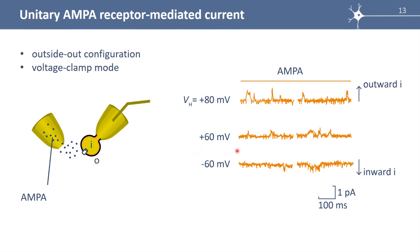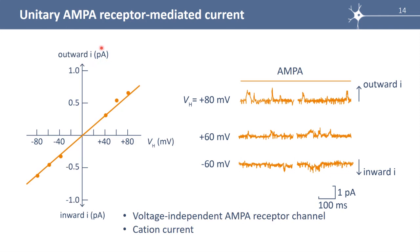To identify the exact value of the reversal potential of the AMPA current, we have to plot the IV curve — the amplitude of the unitary current versus holding membrane potential VH. This shows that the current is inward up to zero millivolt and then outward, which means the reversal potential is exactly at zero millivolt.